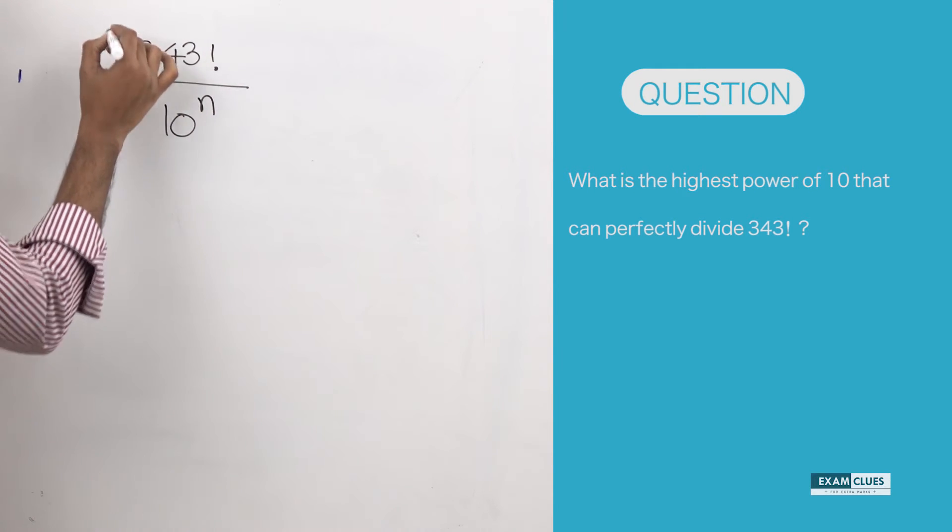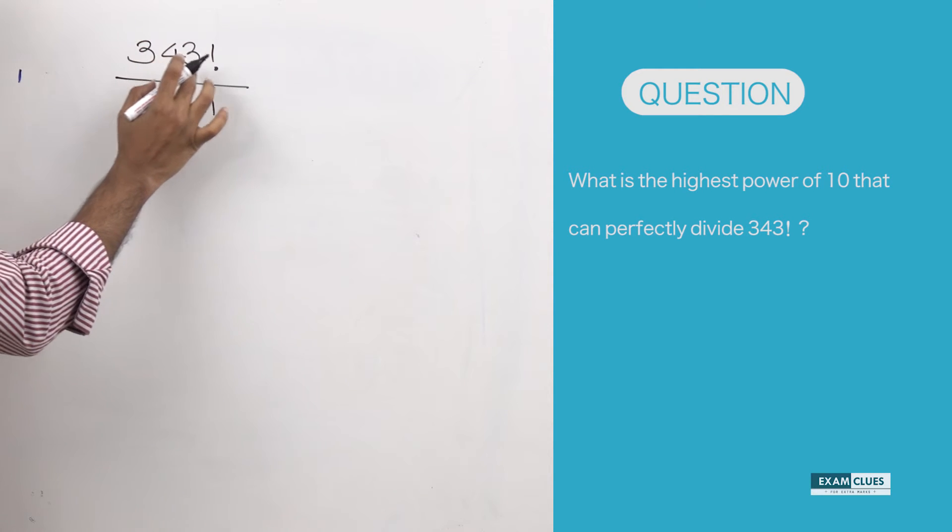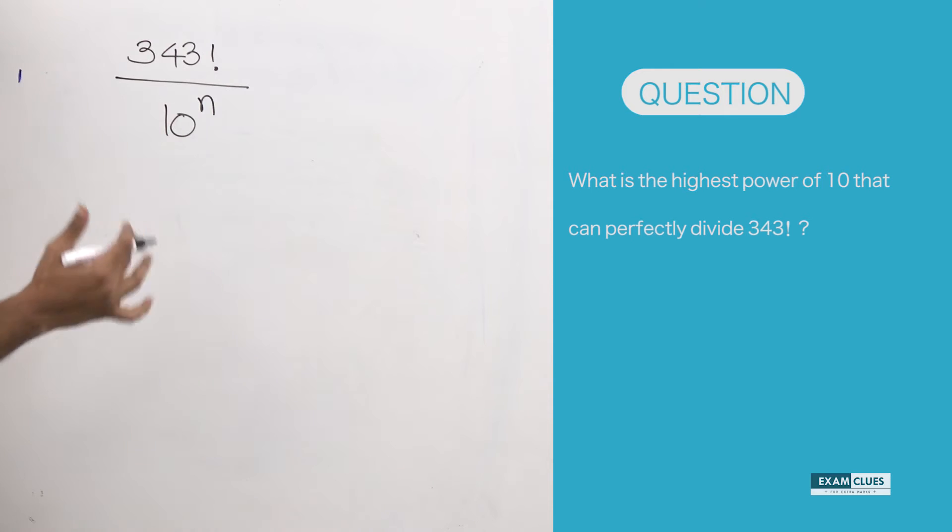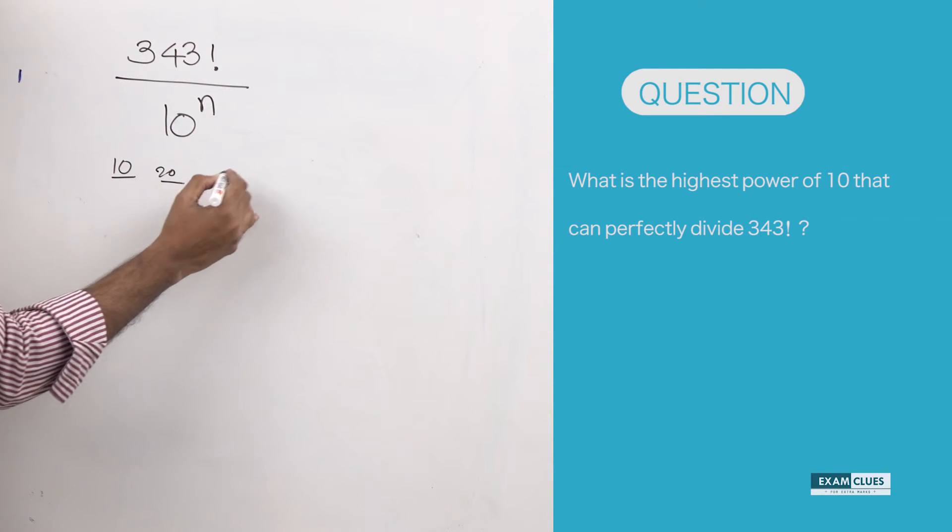How can we find that? The immediate thought many of us get is: hey, 10 has one zero, 20 has another zero, and so on—90, then 100 has two zeros, 110 has one zero, and so on.